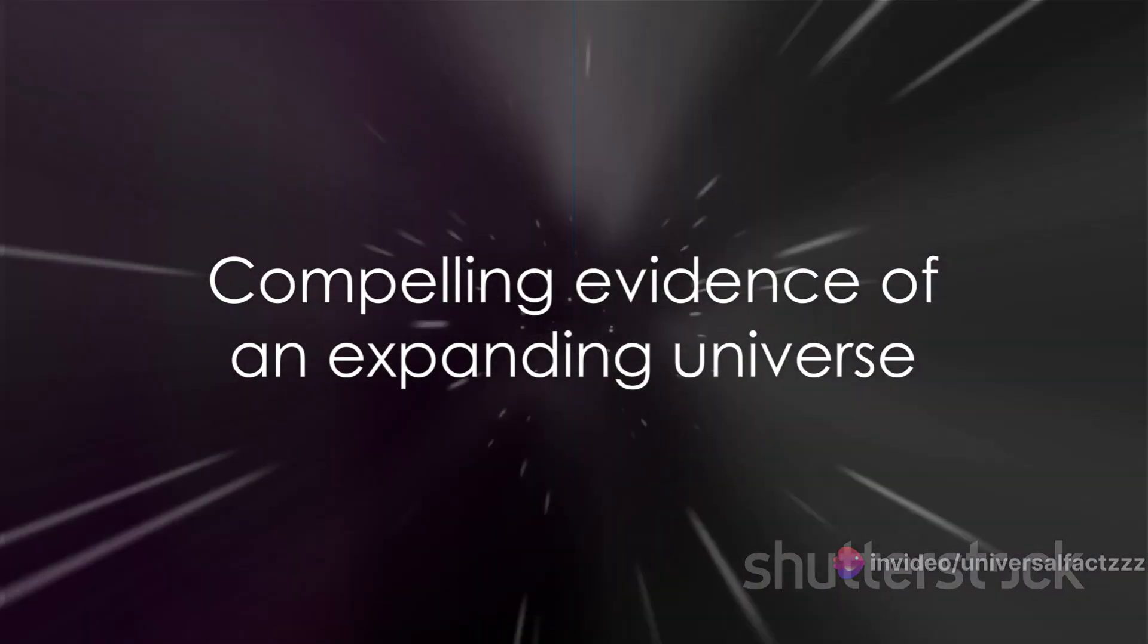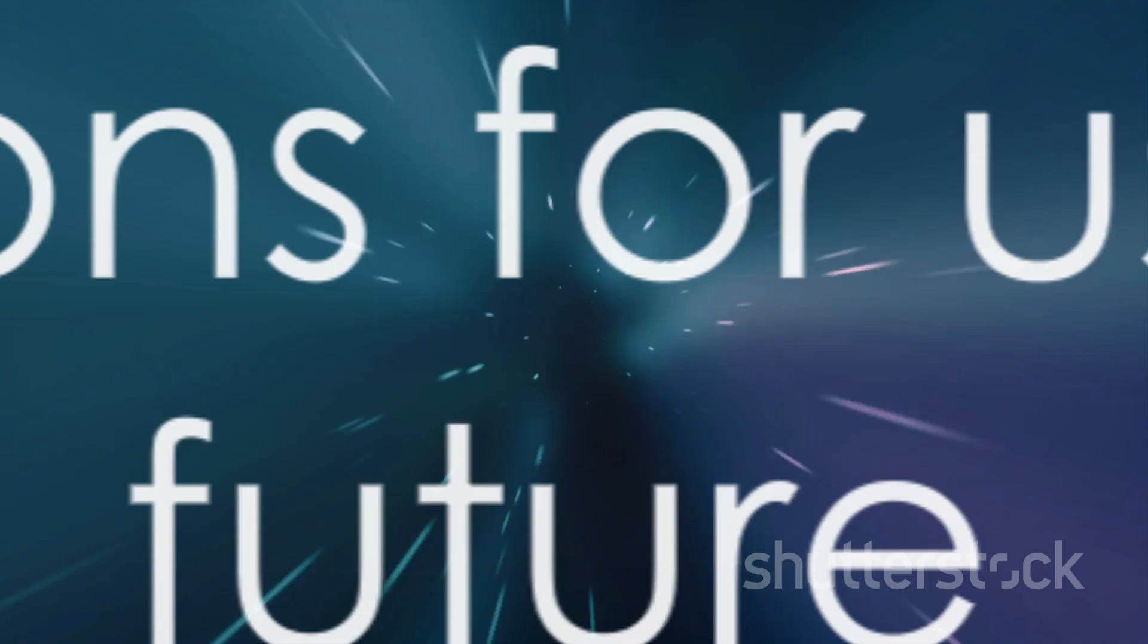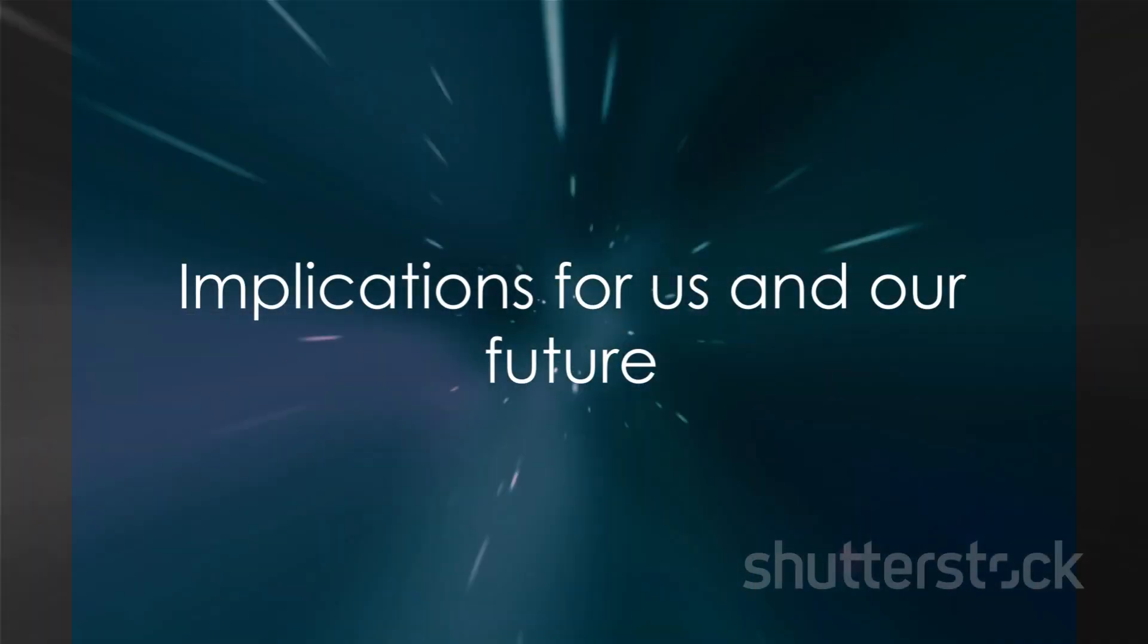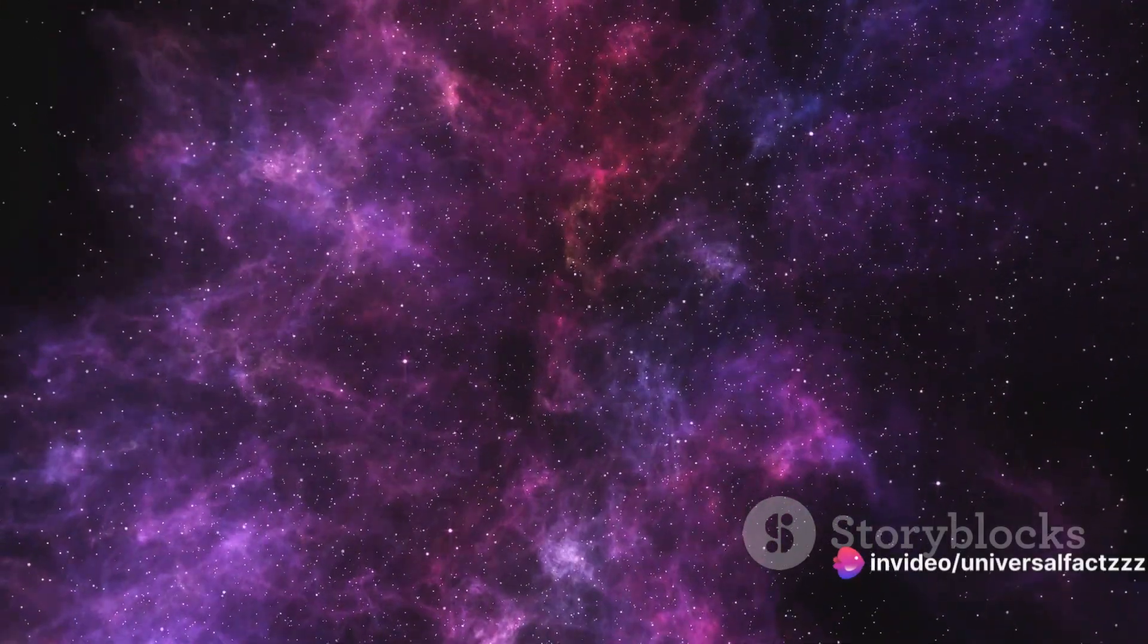When we observe the light from distant galaxies, we notice something peculiar. This light tends to shift towards the red end of the spectrum, a phenomenon known as redshift. But what does this mean? Simply put, it indicates that these galaxies are moving away from us.